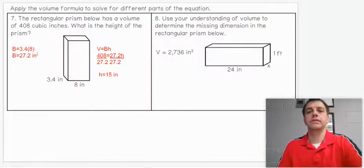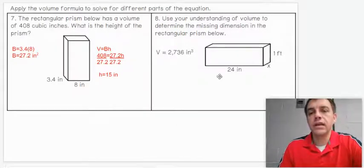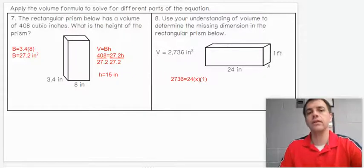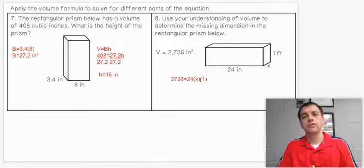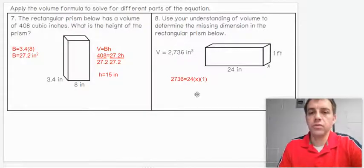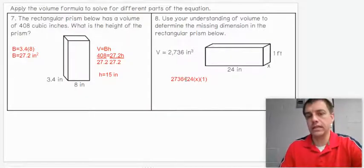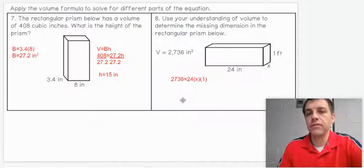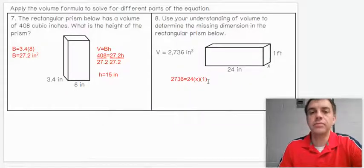Number eight. Again, we're given the volume. This time, we're given the base. We're not given the height. So we don't have the full base area, but we do have the height of the object. Let's go ahead and plug in some numbers. What I did is I kind of expanded it a little bit. Base area is base times height. So I just plug it all into the same side of the equation. I put 24 times X times 1. Base times height times height of the object.